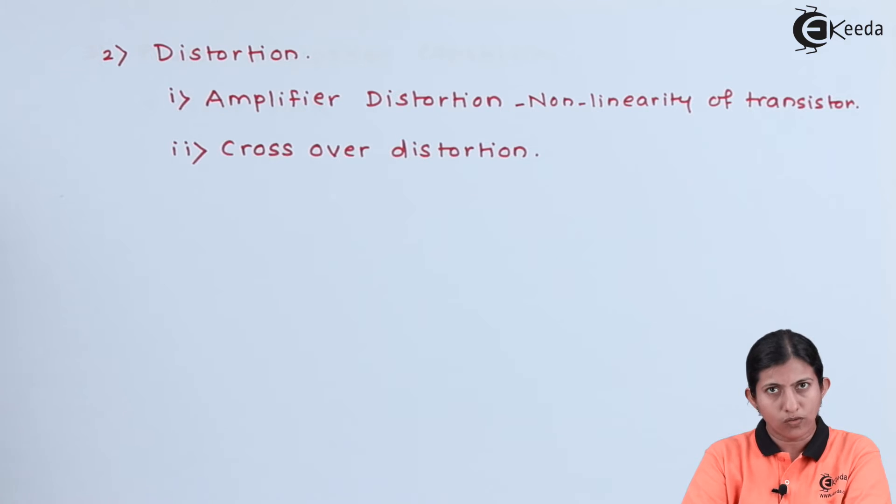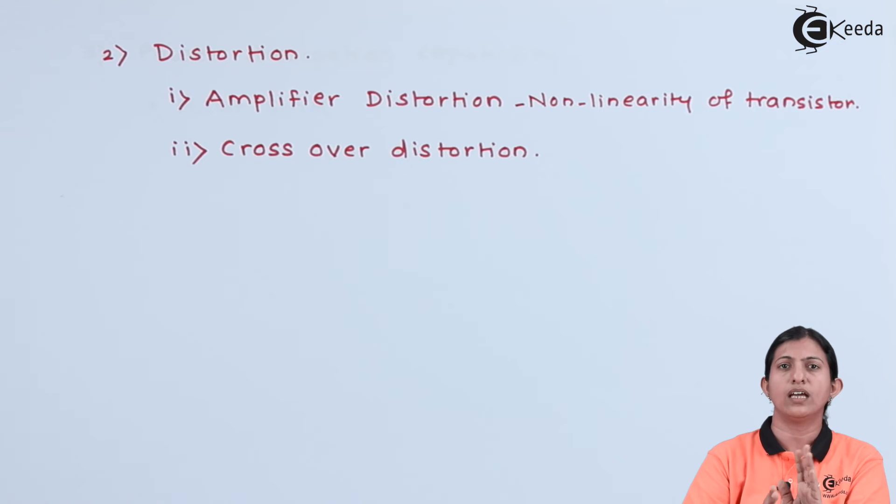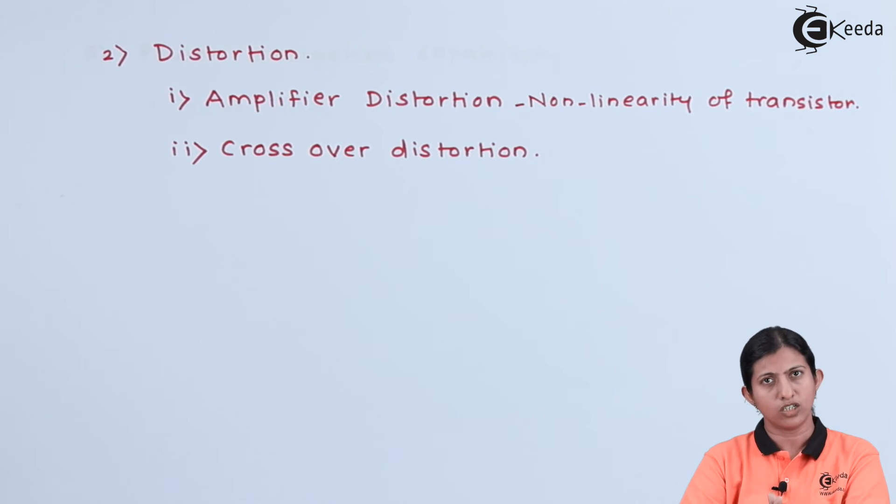The second is crossover distortion. In crossover distortion, both the transistors do not operate in phase with each other, and because of that, crossover distortion takes place. Basically, distortion means if there is a difference between the output and the input signal, then that is called distortion.